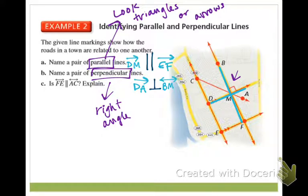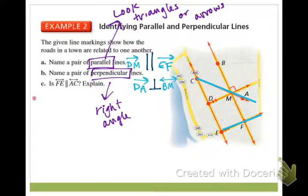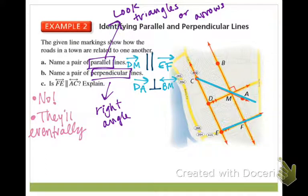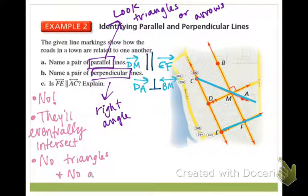Last question: is FE parallel to AC? No — there are two reasons. First, they're on the same plane, so they will eventually intersect. Second, and most importantly, there are no triangles or arrows marked on those lines. No triangles and no arrows means we cannot conclude they are parallel.